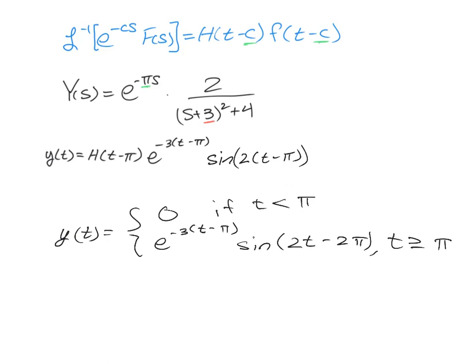And you will notice we can actually simplify this by getting rid of that minus 2π there, because the sine is 2π periodic. So we can actually simplify that down even further as y(t) is equal to zero if t is less than π or e to the negative three (t minus π) times the sine of just 2t for t greater than or equal to π.